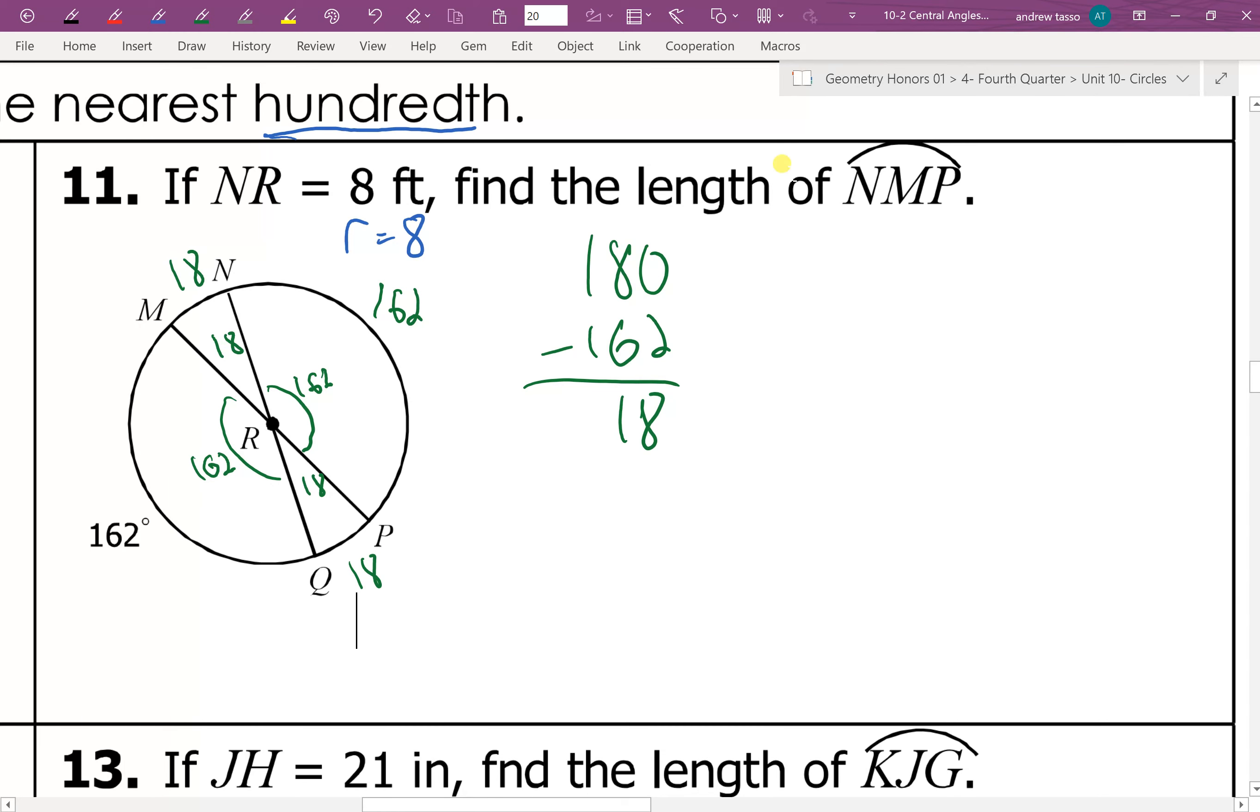And finally, now, if we look at NMP, we're starting at N, going to M, and going around to P. So this would be 180 degrees plus an extra 18 degrees. So if I do 180 plus 18, I would get 198 is the number of degrees in this yellow arc that I've drawn here. 198 degrees.